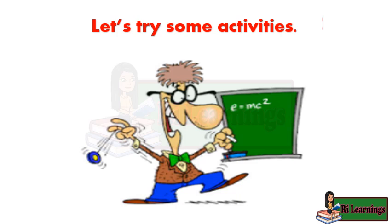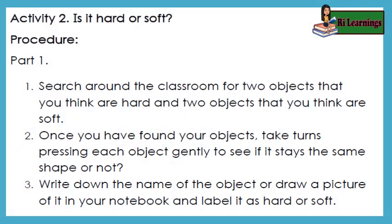Let's try some activities. Activity 2: Is it hard or soft? Part 1: 1. Search around the classroom for two objects that you think are hard and two objects that you think are soft. 2. Once you have found your objects, take turns pressing each object gently to see if it stays the same shape or not. 3. Write down the name of the object or draw a picture of it in your notebook and label it as hard or soft.